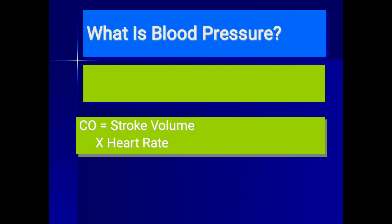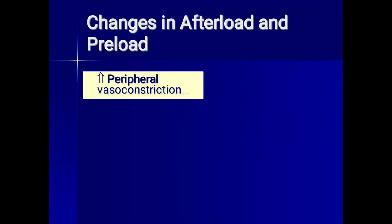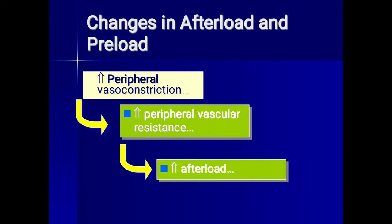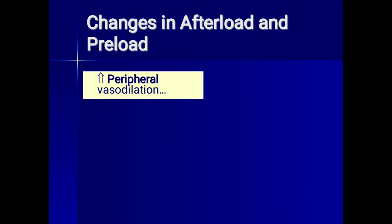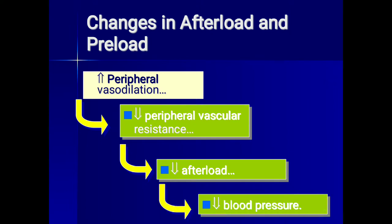Blood pressure equals cardiac output multiplied by systemic vascular resistance, and cardiac output equals stroke volume multiplied by heart rate. Whenever there is peripheral vasoconstriction, there is increased peripheral vascular resistance, increased afterload, and a rise in blood pressure. Conversely, peripheral vasodilation decreases peripheral vascular resistance, reduces afterload, and causes a drop in blood pressure.